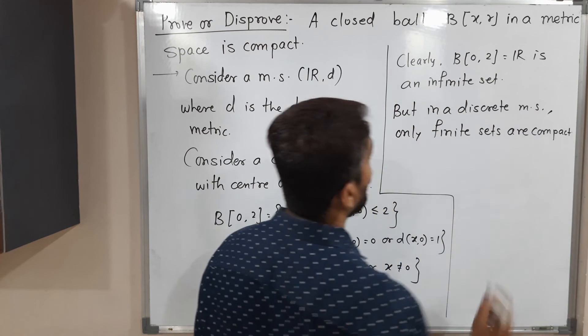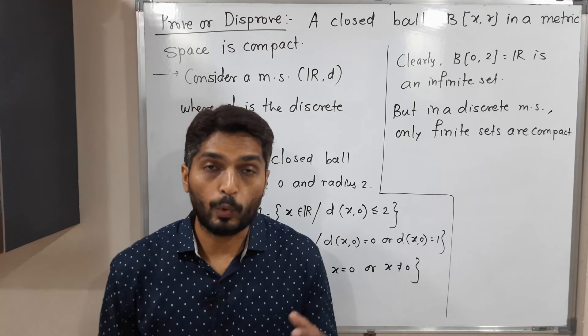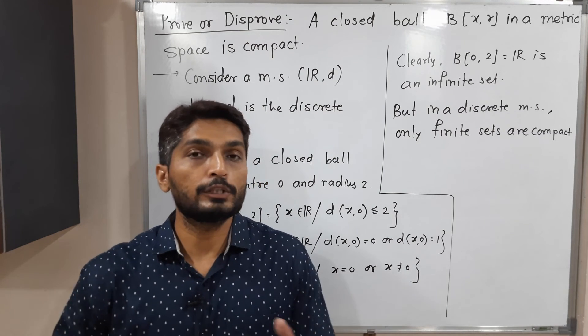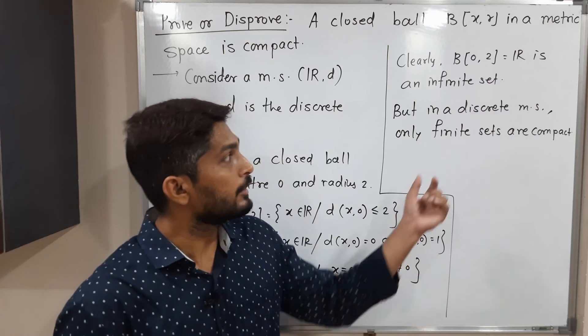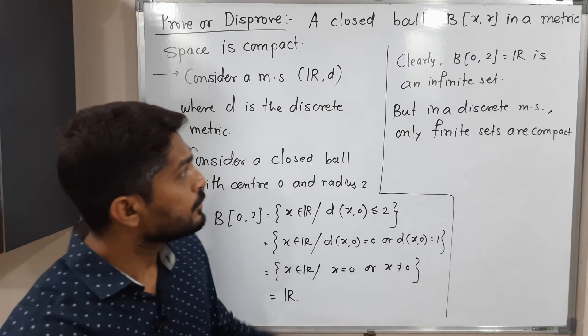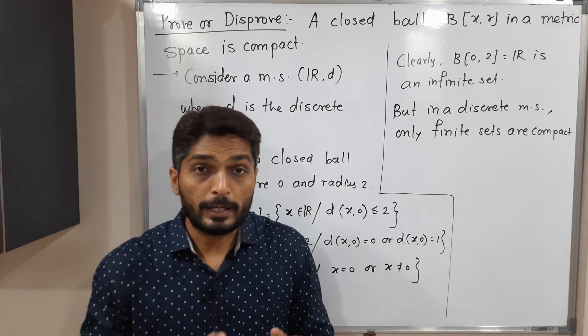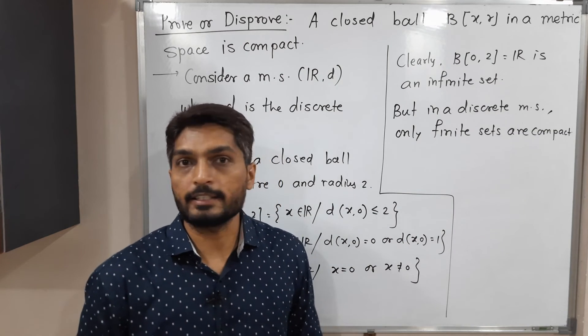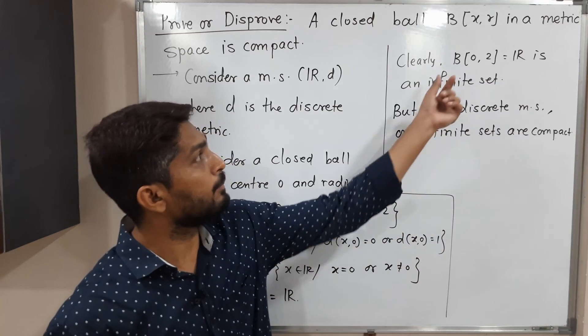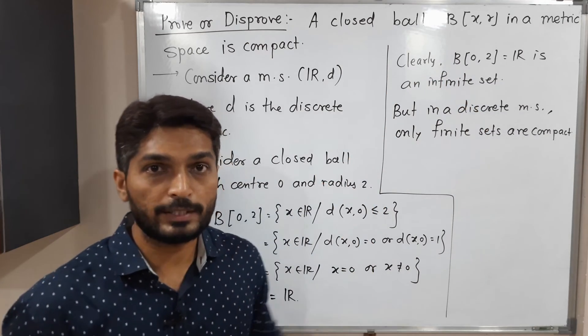So if you want the proof in details, you can check my playlist. You can find the proof of this result. So in a discrete metric space, only finite sets are compact. That means if you have any infinite set, it is not compact. And this ball is an infinite set, so that's why it is not compact.